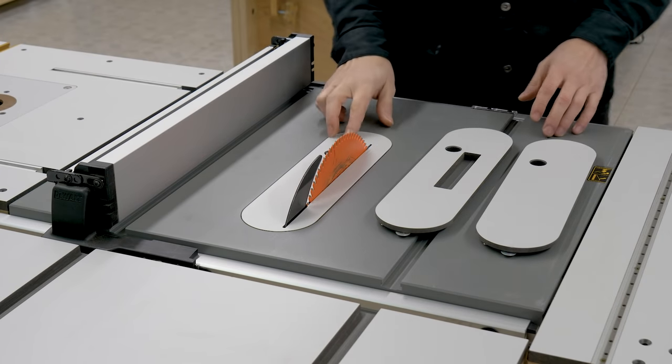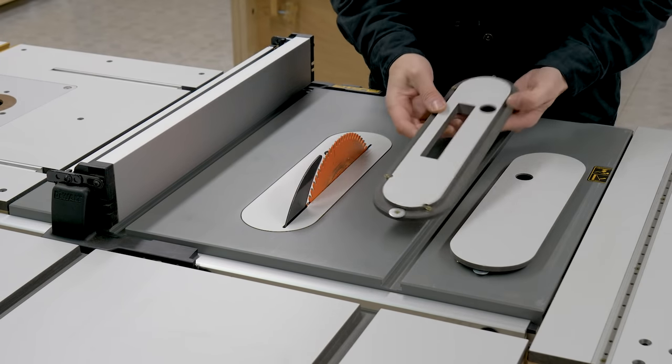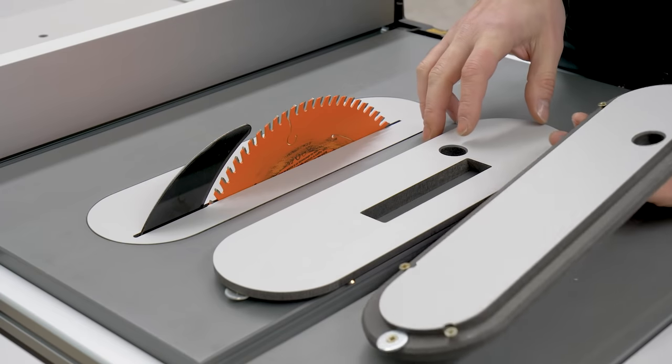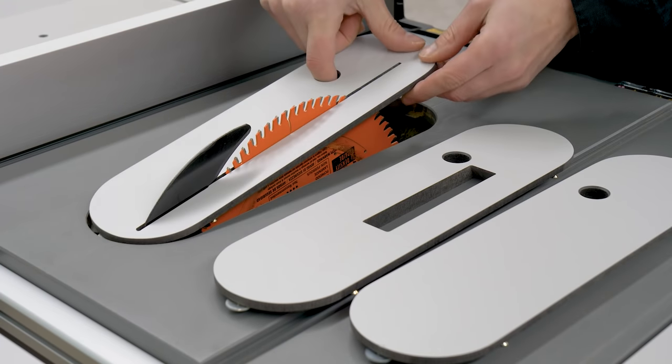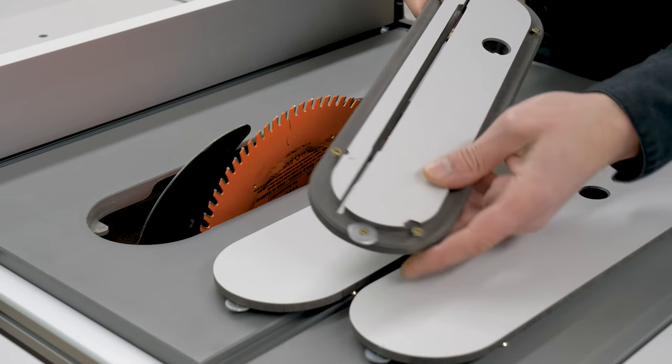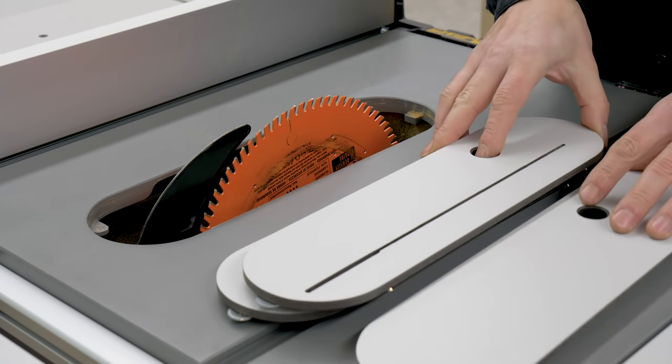It's time to talk about the homemade zero clearance inserts from my last video. I made them using the same material as the benchtops, a kind of MDF that's harder and more compact, and with melamine on both sides. It's 13mm thick. We could also use normal MDF, plywood, or almost any kind of board between 10 and 13mm thick.